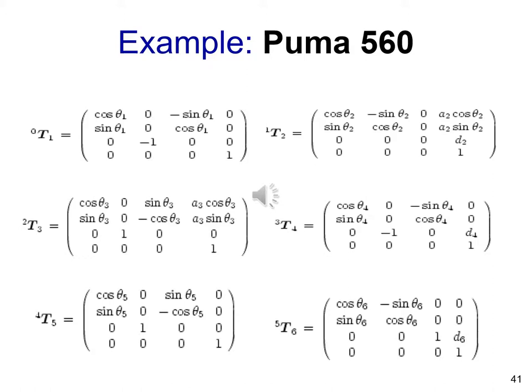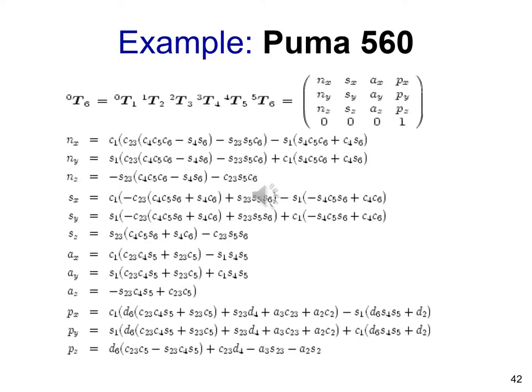For the PUMA 560, we are going to have six matrices as shown here. We have transformation matrices from 0 to 1 through 5 to 6. Of course, this can be programmed with a computer — just substitute the values of theta, which are our joint variables.